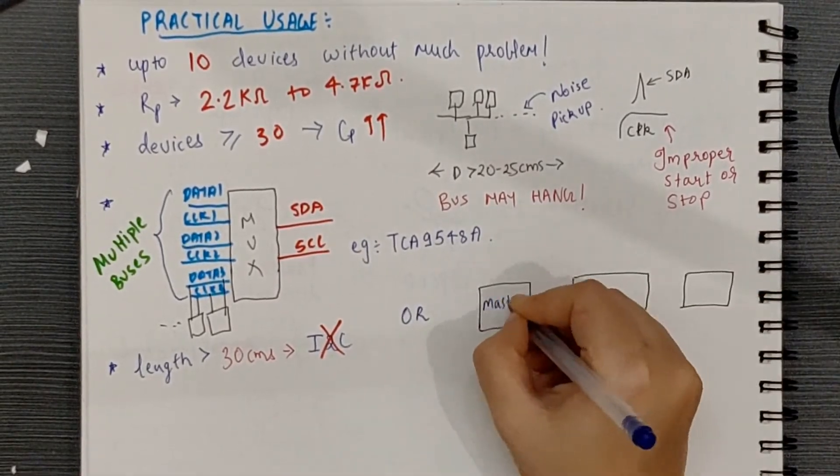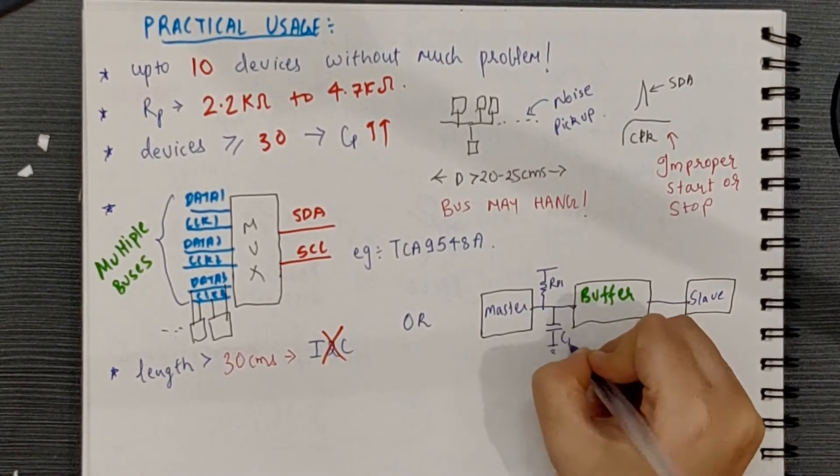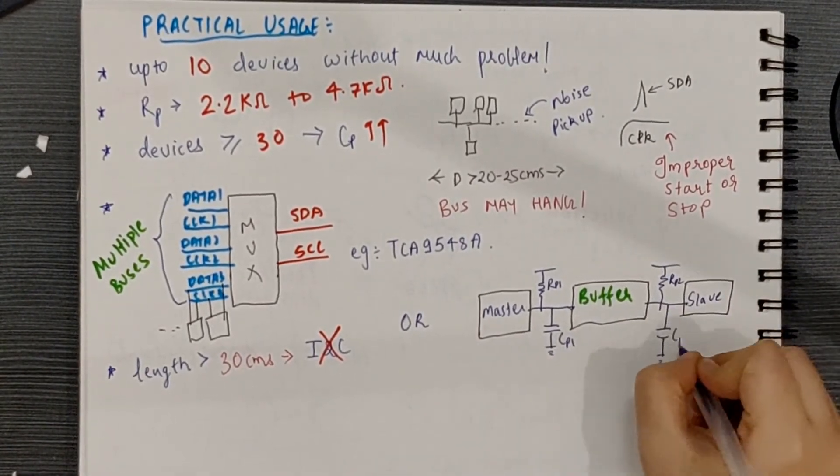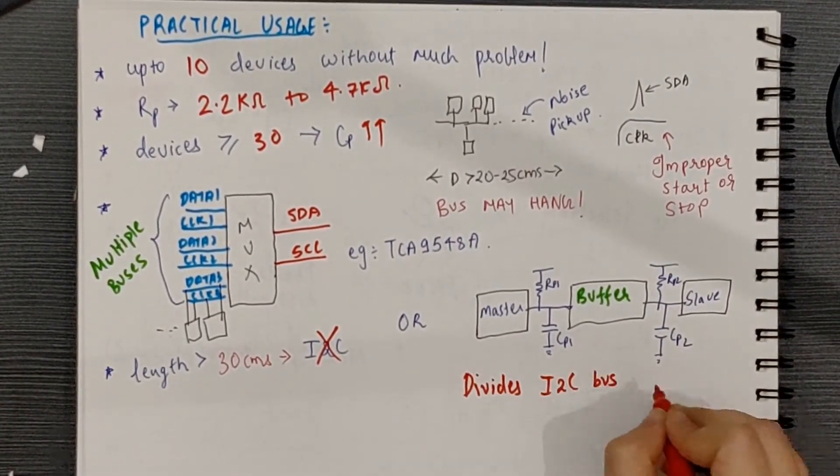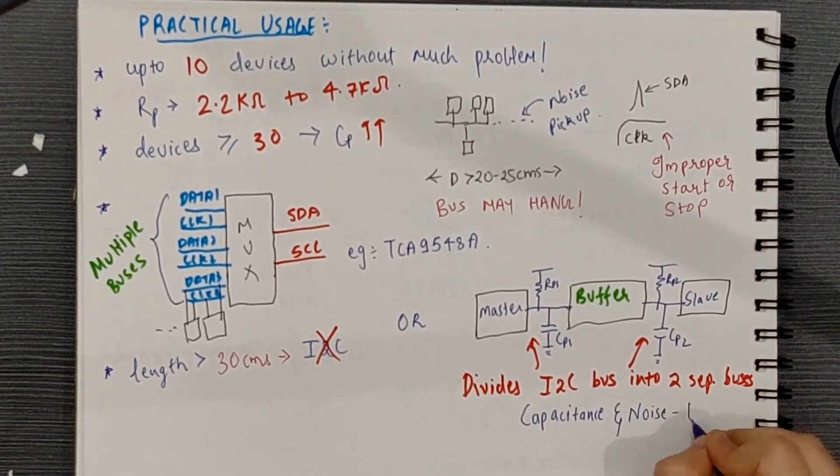In systems that require a long bus, which is say beyond 30 cm, the best thing is either don't use I2C bus or use repeaters to isolate the bus into segments, keeping the capacitance under control, as well as the noise.